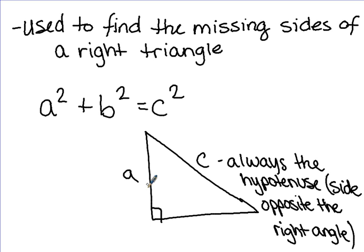Sides a and b are interchangeable, so it doesn't matter which one is a, which one is b, as long as c is always the hypotenuse. So if we're given side a and we're given side b of a right triangle, we can use that to find the measure of side c. And we're going to look at some examples of how to do that.